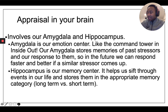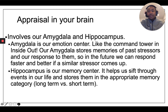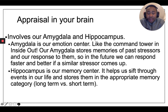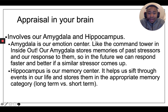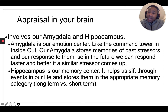In our brain, what appraisal looks like is our amygdala and our hippocampus, amongst other brain structures, are involved in that appraisal. Our amygdala is our emotion center — if you think of Inside Out, those characters responding to events, that actually happens. The amygdala stores memories of our past stressors and how we respond to them, so in the future we can respond to them faster and better if a similar stressor comes up. That's why emotions can make a memory stronger.